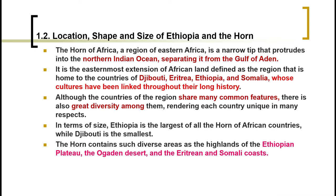Welcome to this video tutorial. Today we're going to see the basic concepts in location, shape, and size of Ethiopia and the whole Horn of Africa. The Horn of Africa is an area found in the northern Indian Ocean, separating it from the Gulf of Aden and the south of the Red Sea. The Horn of Africa includes four countries: Ethiopia, Eritrea, Djibouti, and Somalia. These four countries share many common features with respect to language, culture, identity, and even landscape. That is why this module focuses on these four countries — the geography of Ethiopia and the whole Horn of Africa.